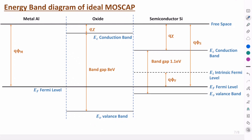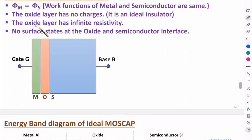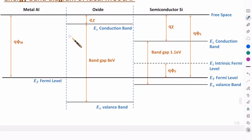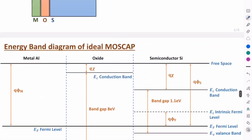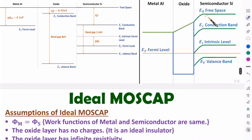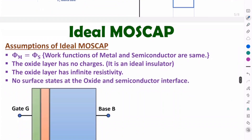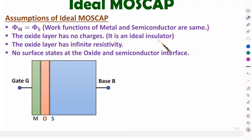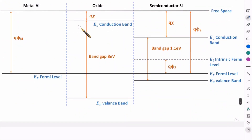The second and third assumptions are based on the oxide layer being ideal. Since the oxide layer is ideal, there will not be any gradient in the conduction band or energy bands across it. In the practical case, there was a gradient — the potential at the metal side was lower and at the semiconductor side was higher, creating a linear slope. But since we have an ideal insulator here, there is no gradient — the energy band is a straight line across the oxide.